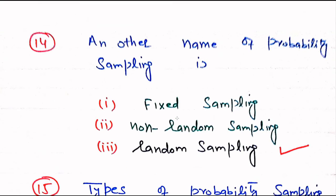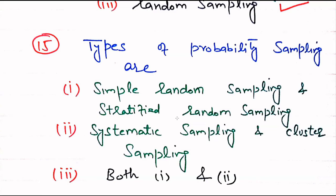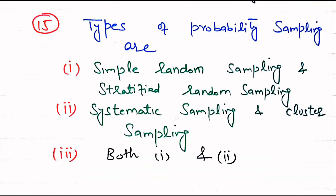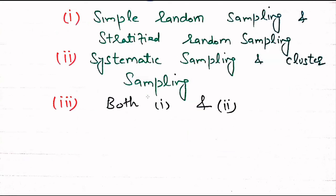Question number 14. Another name of probability sampling is Random sampling. Question number 15. Types of probability sampling are: Simple random sampling, Stratified random sampling, Systematic sampling, and Cluster sampling. Both 1 and 2 is the right choice, covering all four types of probability sampling.